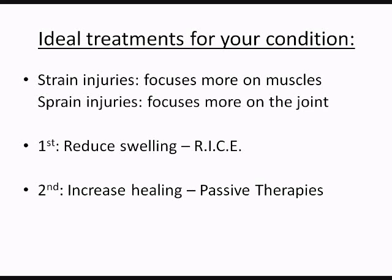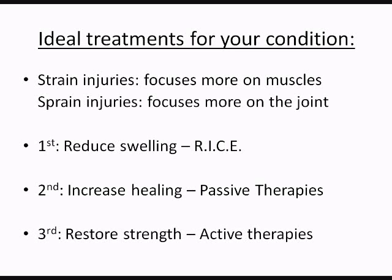Secondly, you would like to increase healing in the joint or in the strain or sprain. This is typically done using passive therapies, which are used by chiropractors and physical therapists and typically include cold laser, electrical modalities, ultrasound, and some of those other therapies — that means somebody else is doing it for you. Thirdly, we would like to restore the strength to the joint or to the injury. This is done using active therapies, where the patient is going to be exercising those muscles, toning those muscles, and doing the therapies with their own motion and strength.